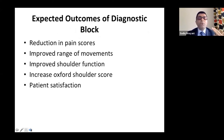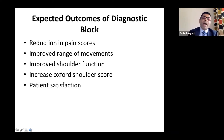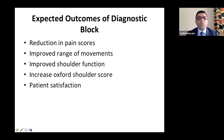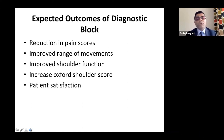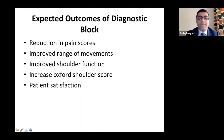I look for: reduction in pain score, improved range of movements, improved shoulder function, increased Oxford shoulder score, and patient satisfaction. Before doing the block, I assess shoulder movement, do the block, and reassess movement afterward. I use 1% lidocaine because it kicks in quickly. I give them a pain diary — even local anesthetic injections can last for a good one week. I ask whether they're sleeping better, lying on that side better, functioning better, opening bottle lids, or showering properly.